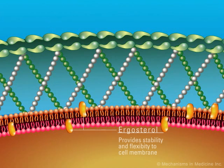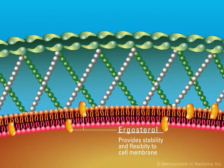One of the essential sterols in the fungal cell membrane is ergosterol. In most fungi, it replaces the cholesterol component found in higher eukaryotic cell membranes. Ergosterol provides stability and flexibility to the fungal cell membrane.